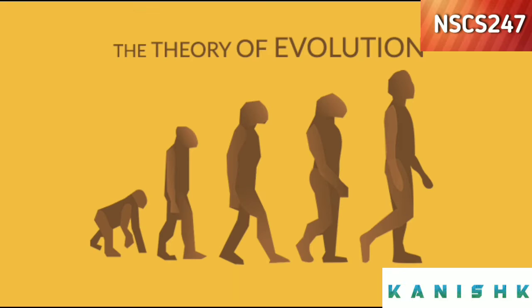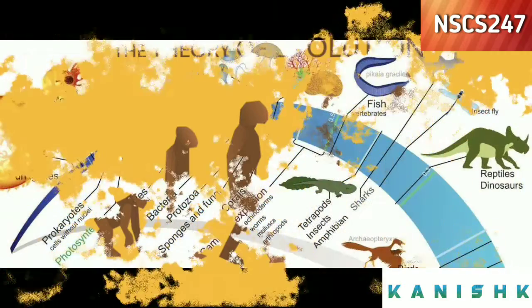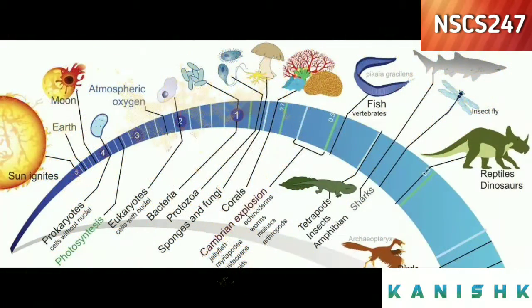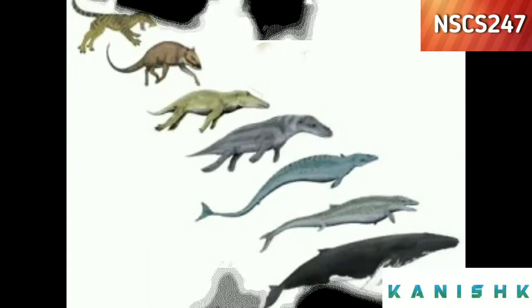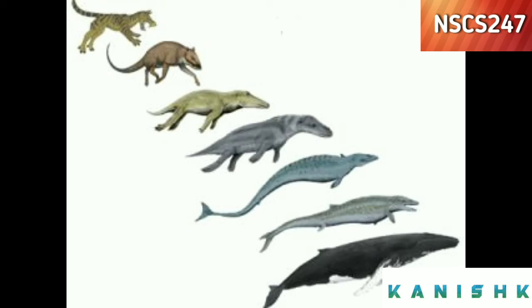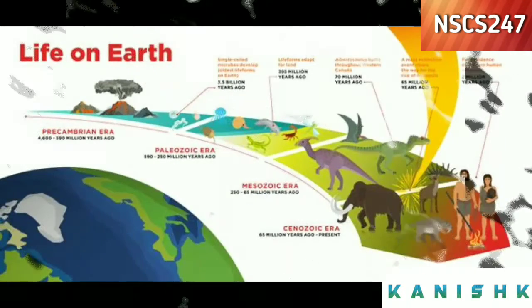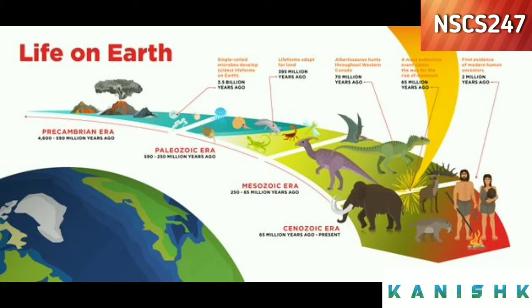In biology, evolution is the change in the characteristics of a species over several generations and relies on the process of natural selection. The theory of evolution is based on the idea that all species are related and gradually change over time.